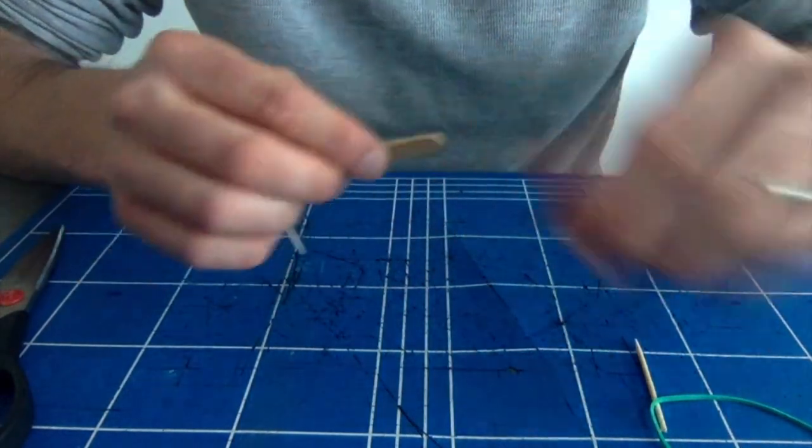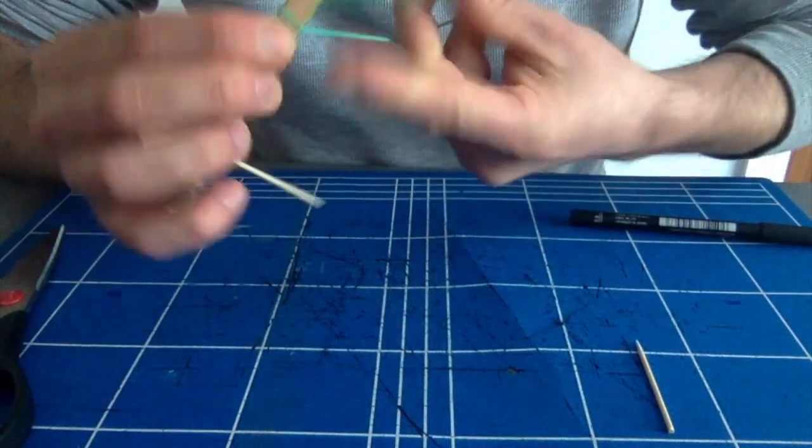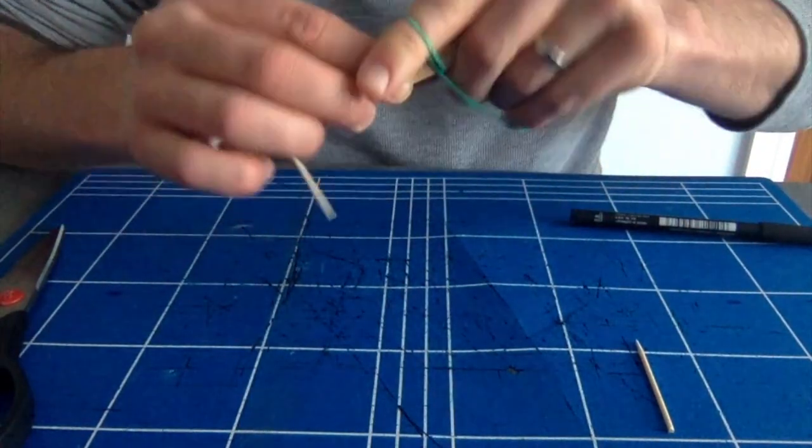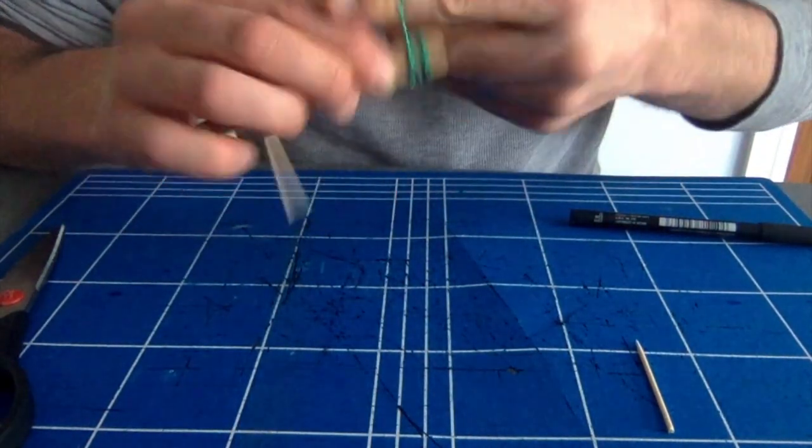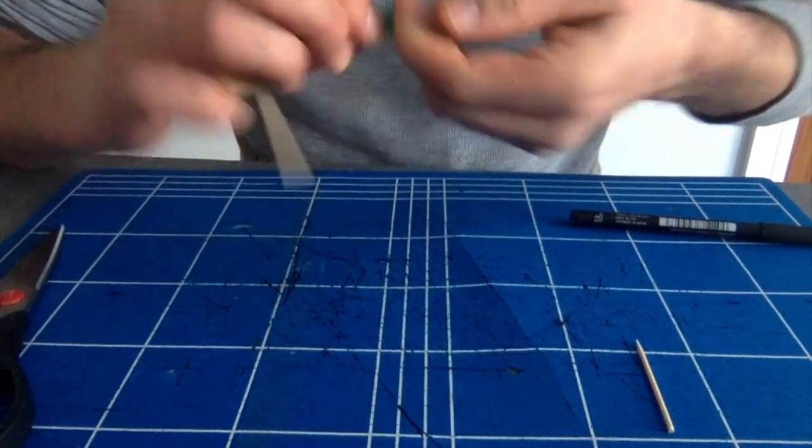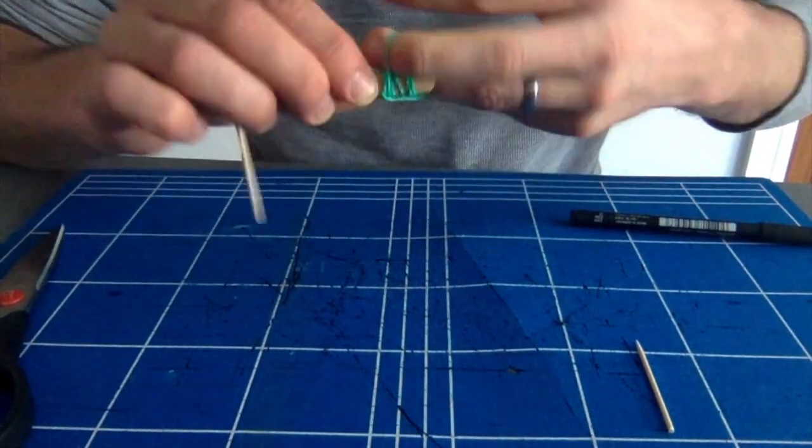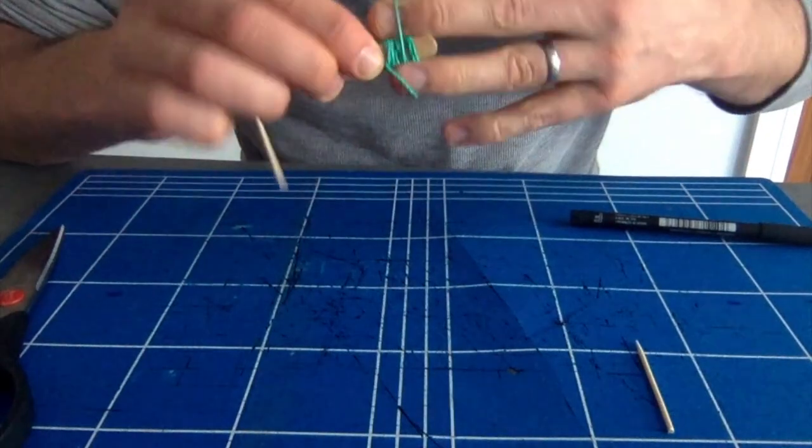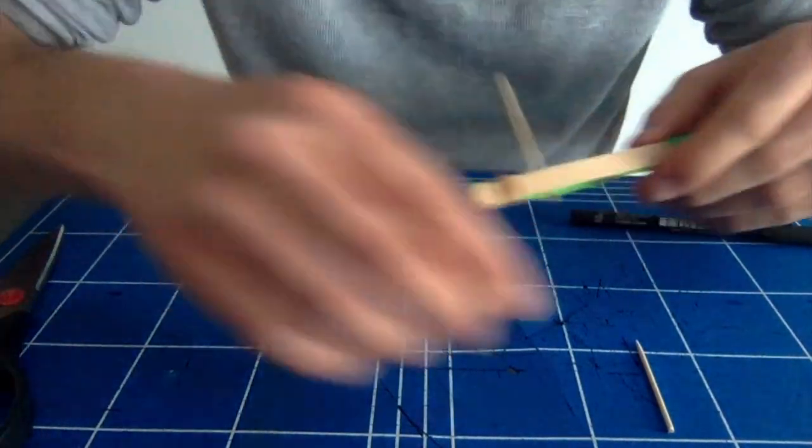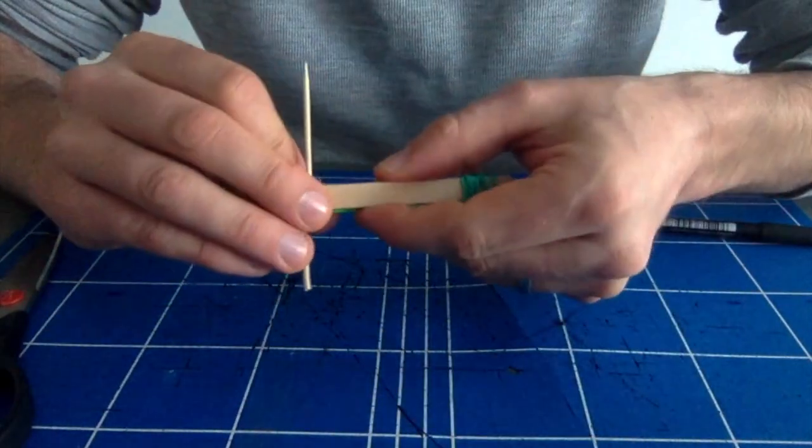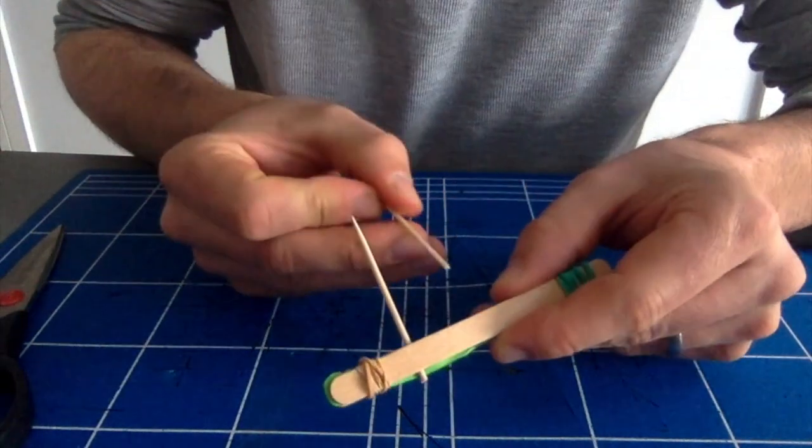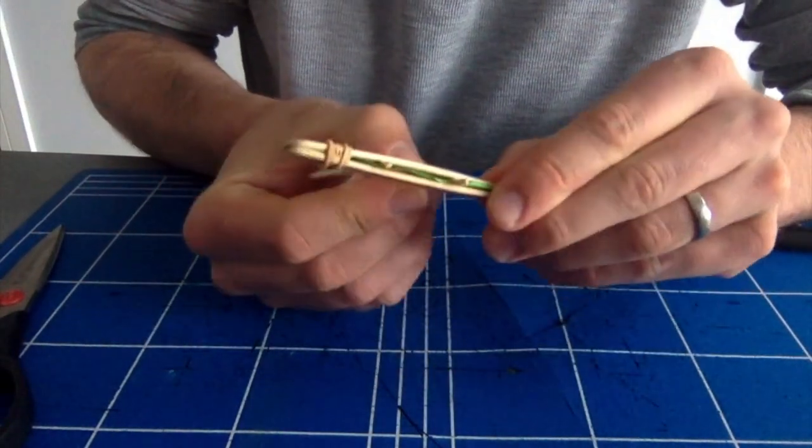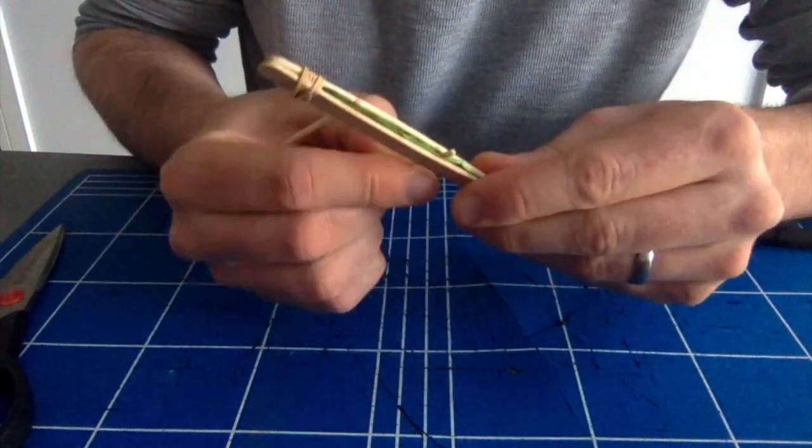Once that's done, we're going to get our second elastic band and wrap that around. Then we'll try and slide our second toothpick in, trying not to damage the paper too much.